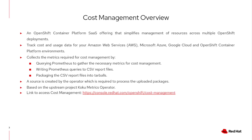It obtains OpenShift usage data by querying Prometheus every hour to create CSV report files which are then packaged into tarballs and uploaded to cost management. By default, the payload is shipped to cost management every six hours. The cost management operator can create a source in the Red Hat console. A source is required for cost management to process the uploaded packages. The coco metrics operator is the upstream community version and cost management is based on this project.